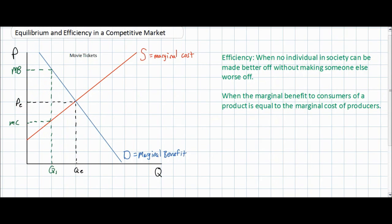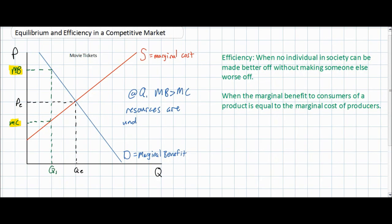Assume that instead of producing QE movie tickets, the market only produced Q1 movie tickets. At Q1, the marginal benefit enjoyed by consumers is rather high — many consumers would be willing to pay a high price for Q1 movie tickets. However, the marginal cost to producers is very low, indicating that this is an inefficient quantity because the marginal benefit is greater than the marginal cost. Resources are under-allocated towards movie tickets at a quantity of Q1.